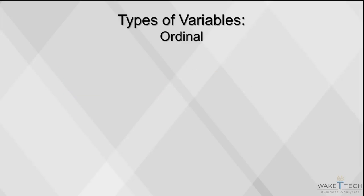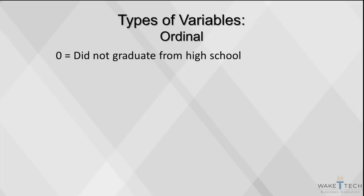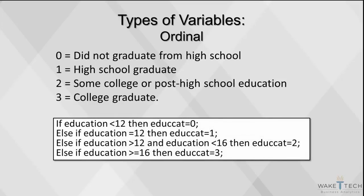The coding process is similar with other categorical variables. For the variable education, we might code as follows: 0 equals did not graduate from high school, 1 equals high school graduate, 2 equals some college or post high school education, and 3 equals college graduate. Note that for this ordinal categorical variable, we need to be consistent with the numbering because the value of the code assigned has significance — the higher the code, the more educated the respondent is. In SAS, we would convert years of education to education categories accordingly.